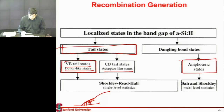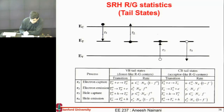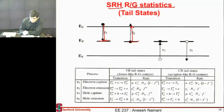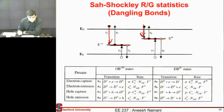I also have these amphoteric states which arise due to a dangling bond, and many times I have to invent new physics just to represent them. For tail states that are either a donor or an acceptor, you have one state and you use Shockley-Read-Hall statistics to represent the recombination generation. But when you have a dangling bond, each will have two states — it can absorb an electron, then absorb another electron on top of it. So I have to represent that with new statistics, and you see very rich physics being used to represent the recombination generation due to these dangling bonds.